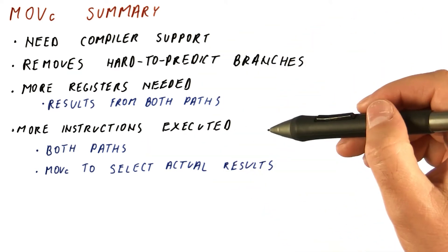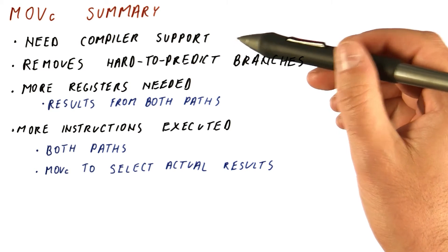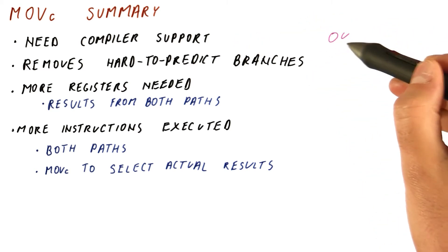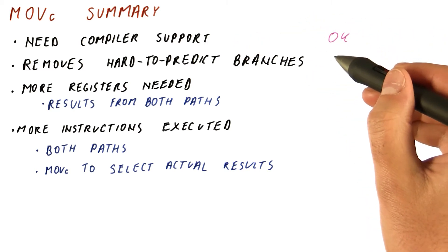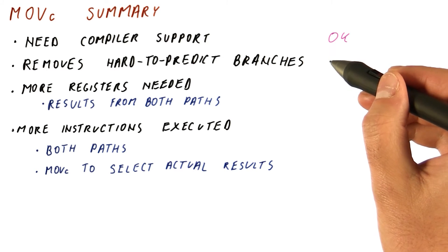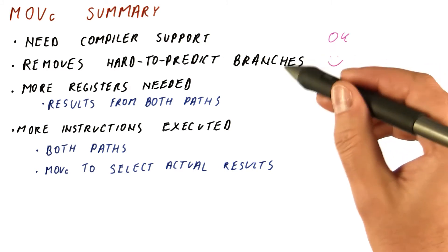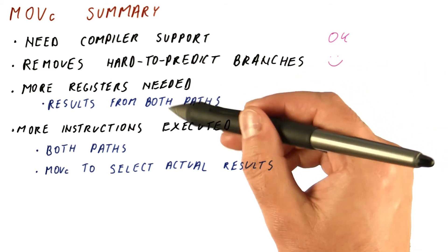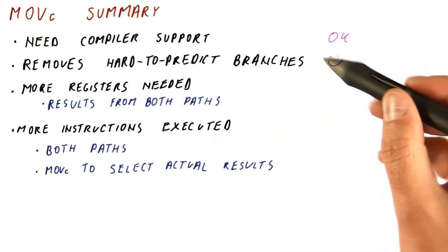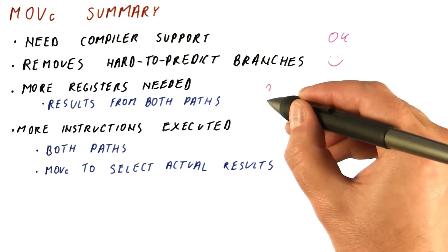Some of these are necessary in order to do if conversion. For example, the compiler support is okay, we need that. It will remove the conditional branches that are hard to predict, so we want to stay that way. But the need for more registers, for example, can we do something about that?